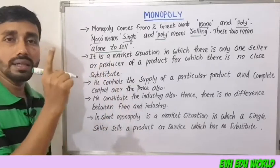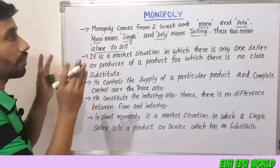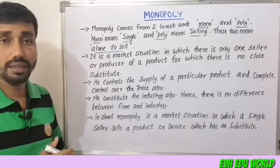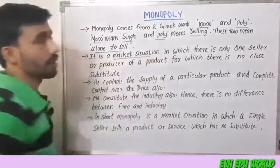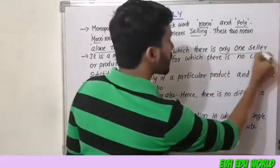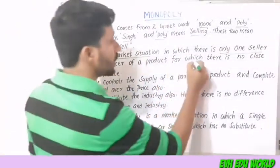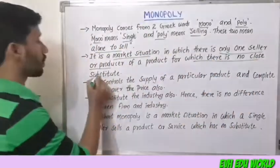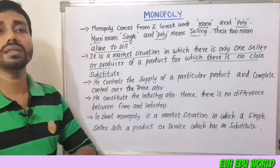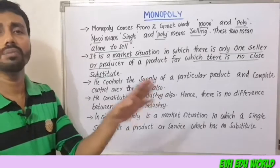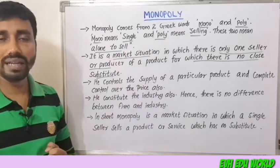Monopoly is a market situation in which there is only one seller or producer of a product for which there is no close substitute. That is why we say monopoly.